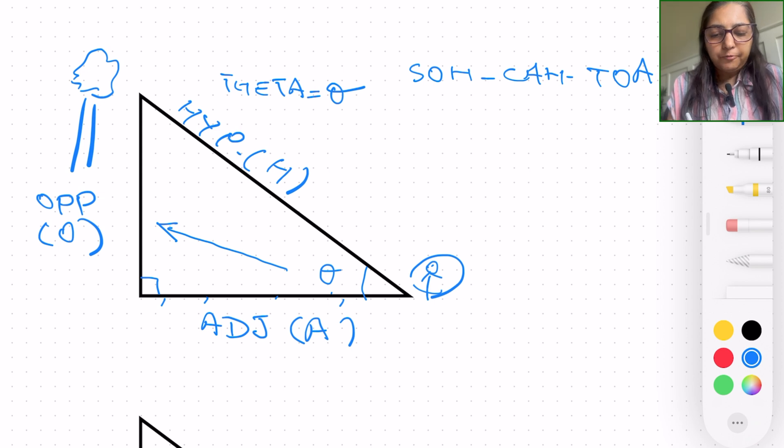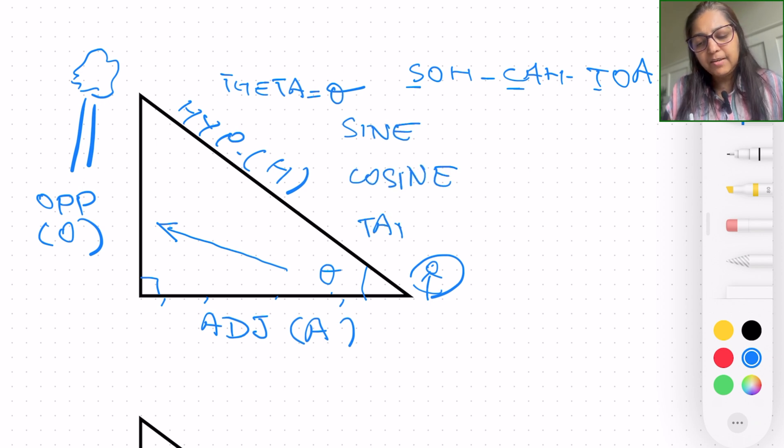The first alphabet on the abbreviation, S, C, T, each of these means the trigonometric angle that we are trying to measure. So what is sine, cosine, or tangent? Cosine, tangent.